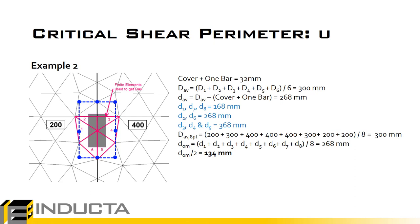In a similar example for calculating the critical punching shear perimeter, the geometry line defining the 200mm thick slab zone and 400mm thick slab zone has been modelled directly over the center of the column. This means we now have six finite element triangles touching the center of the column, and three of them have 400mm thickness. We therefore calculate the average depth as 300mm, and then use that to calculate the critical perimeter distance from the column.